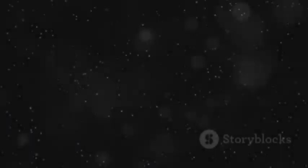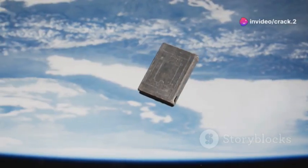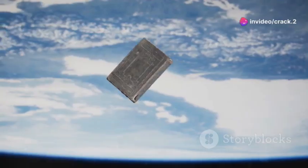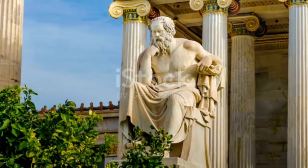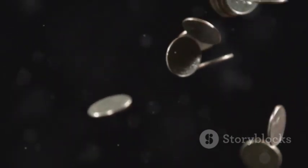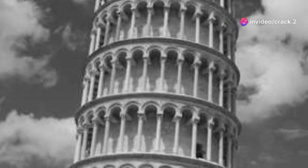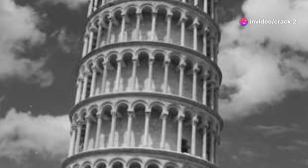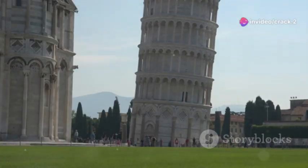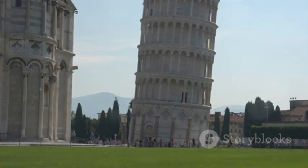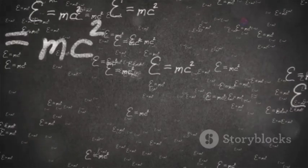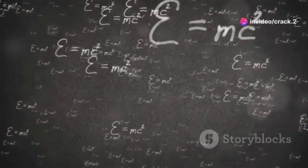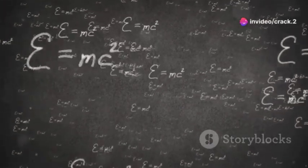For centuries the nature of gravity has captivated thinkers and scientists. The ancient Greek philosopher Aristotle believed that objects had an inherent tendency to move towards their natural place, with heavier objects falling faster than lighter ones. This idea prevailed for nearly 2,000 years until Galileo Galilei challenged it through his legendary experiments at the Leaning Tower of Pisa. Galileo demonstrated that objects of different masses fall at the same rate, neglecting air resistance. This groundbreaking observation paved the way for a new understanding of gravity based on mathematical laws and experimental verification.